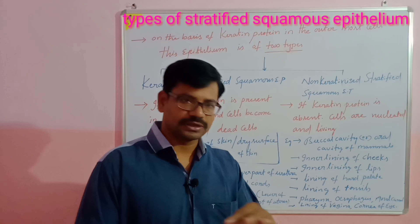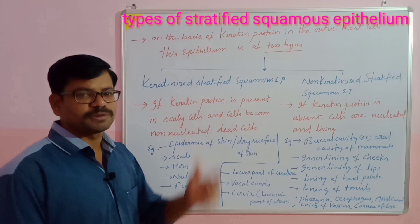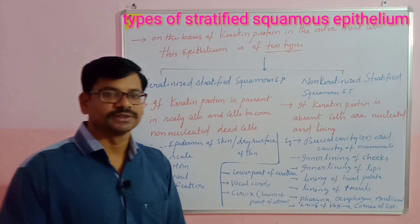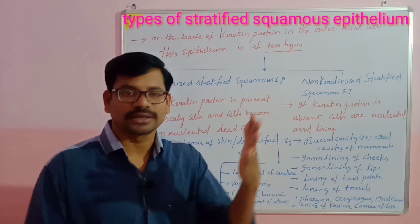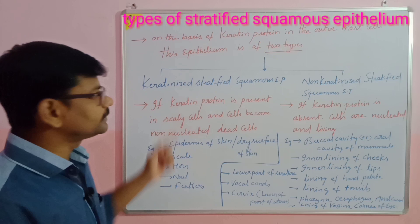Stratified squamous epithelium is mostly present on the surface of the body. Epithelium is the outermost covering of the body, and the maximum parts are covered by stratified epithelium. The main role of stratified epithelium is to protect a particular tissue from physical, chemical, mechanical, or osmotic stresses.